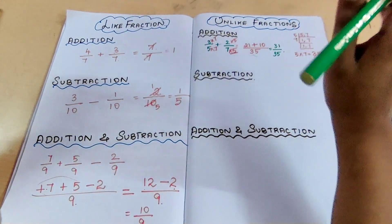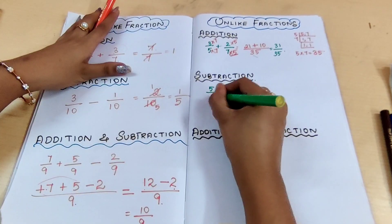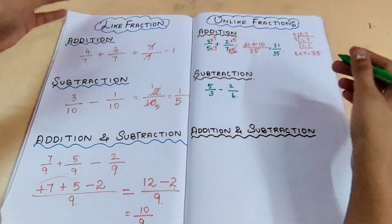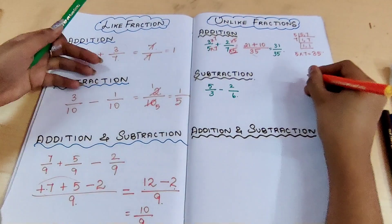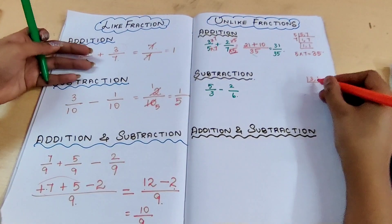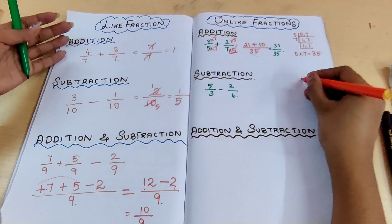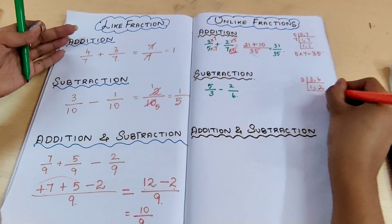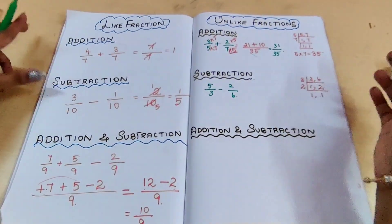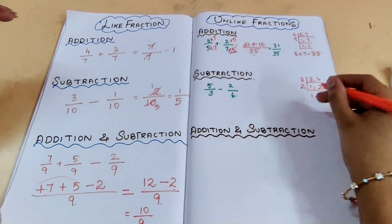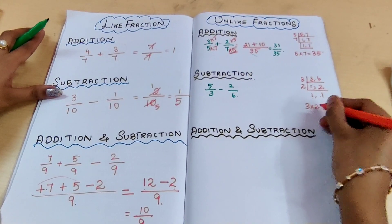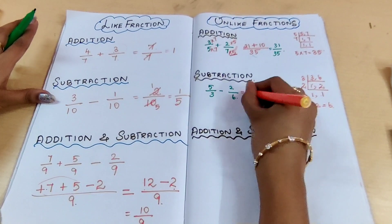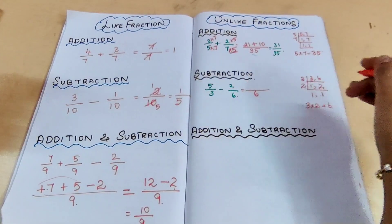Now let us see subtraction in unlike fractions: 5 by 3 minus 2 by 6. Both are unlike fractions with different denominators, so take 3 and 6 and find LCM. We have a common factor: 3 ones are 3, 3 twos are 6. Then 2 ones are 2. The LCM is 3 into 2 = 6. So 6 is the LCM and the common denominator. Write 6 as the common denominator.